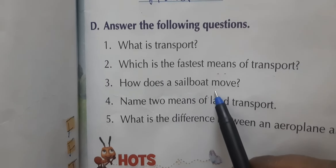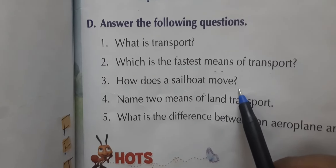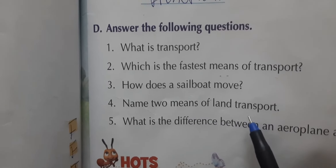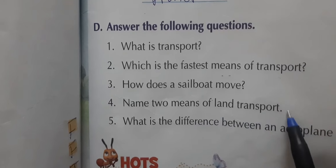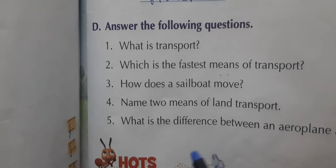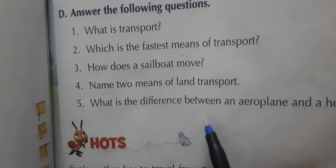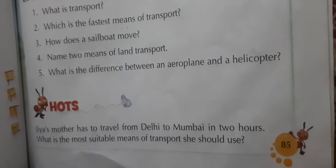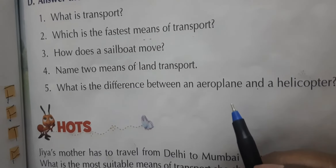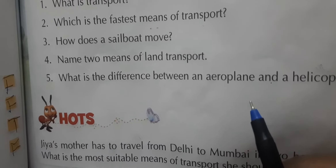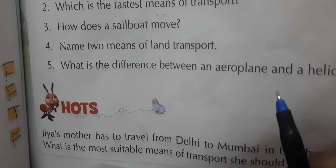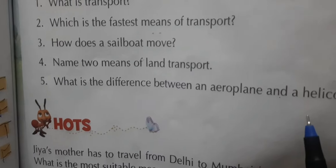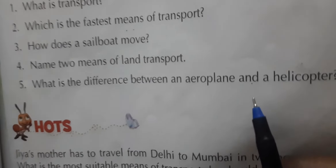How does a sailboat move? A sailboat uses wind power — the power of wind — for moving. Name two means of land transport: car and bus. What is the difference between an aeroplane and a helicopter? An aeroplane can carry many people and is the fastest, while a helicopter carries fewer people and is slower than an aeroplane.